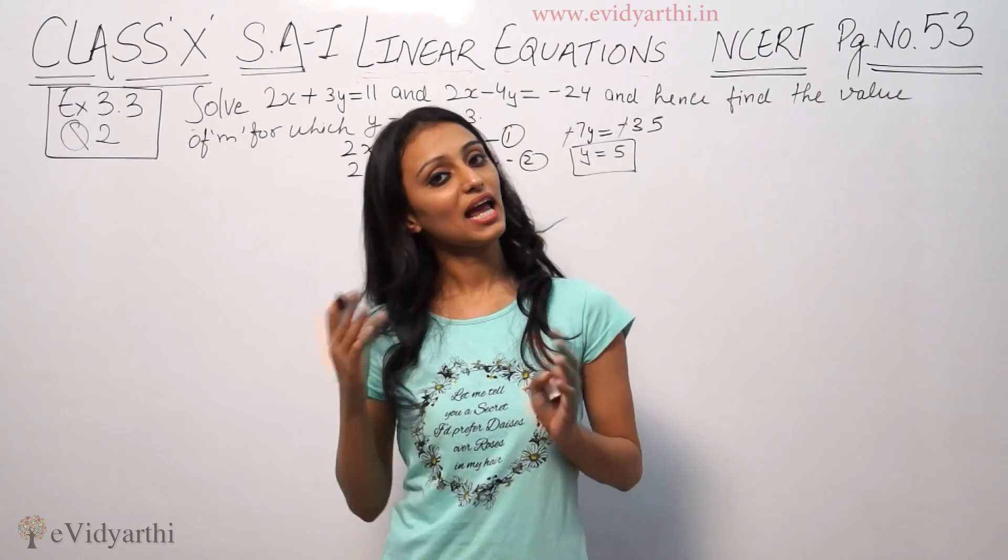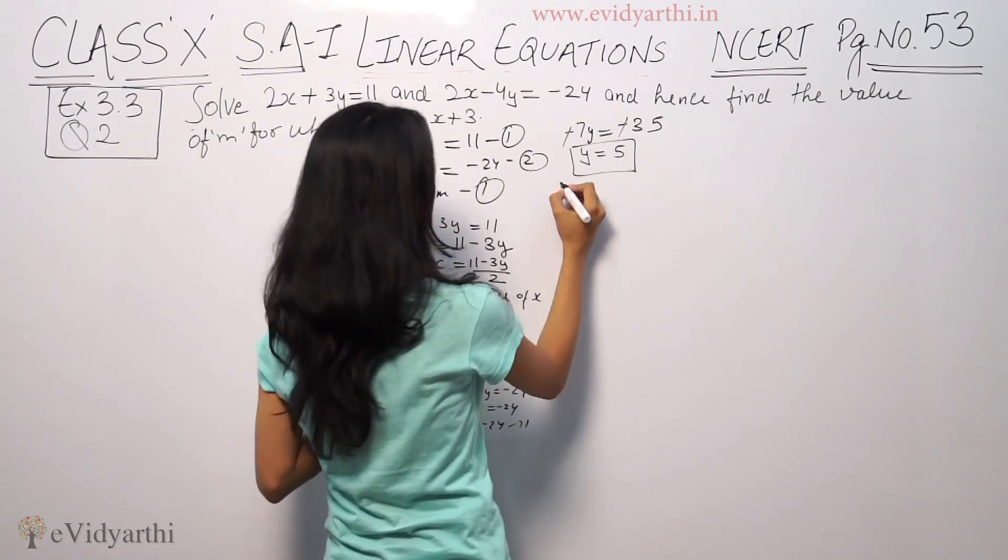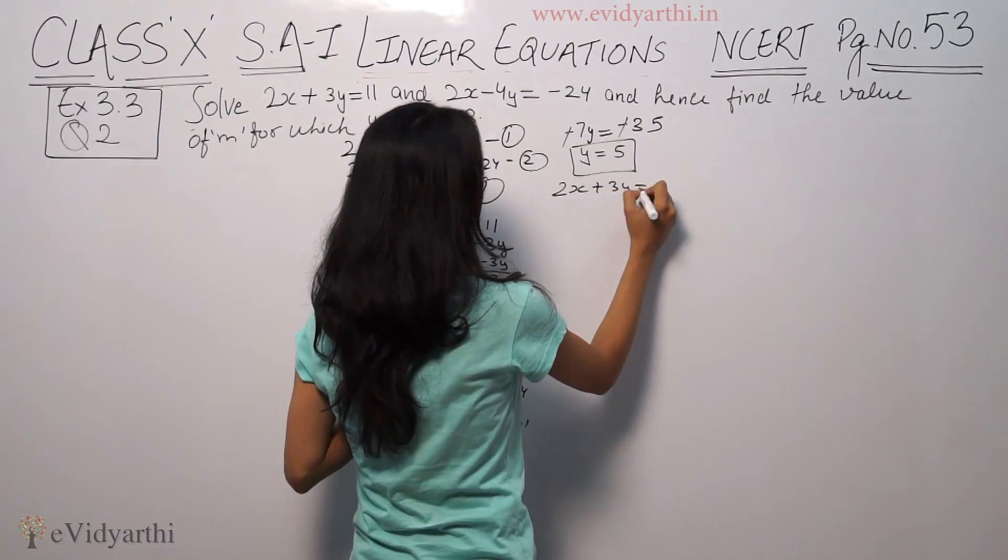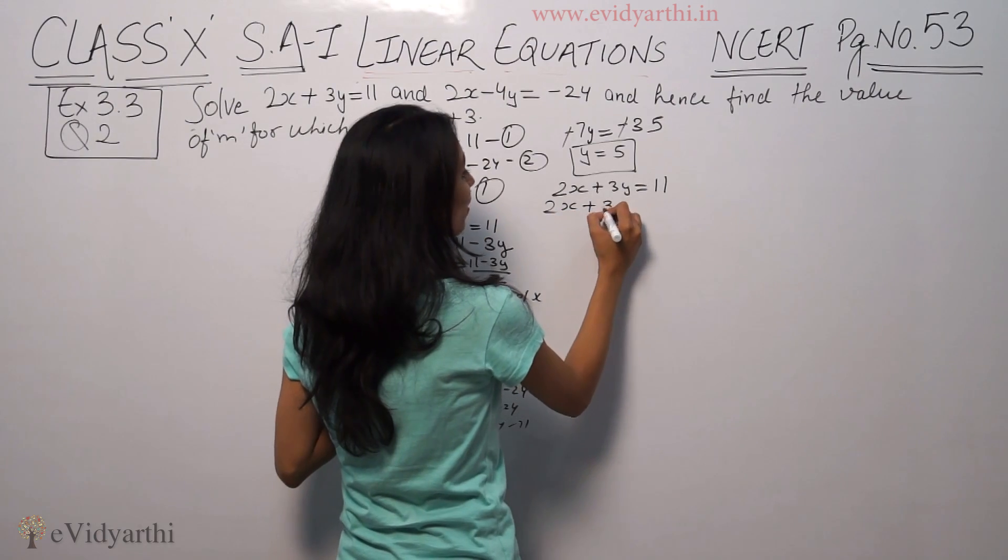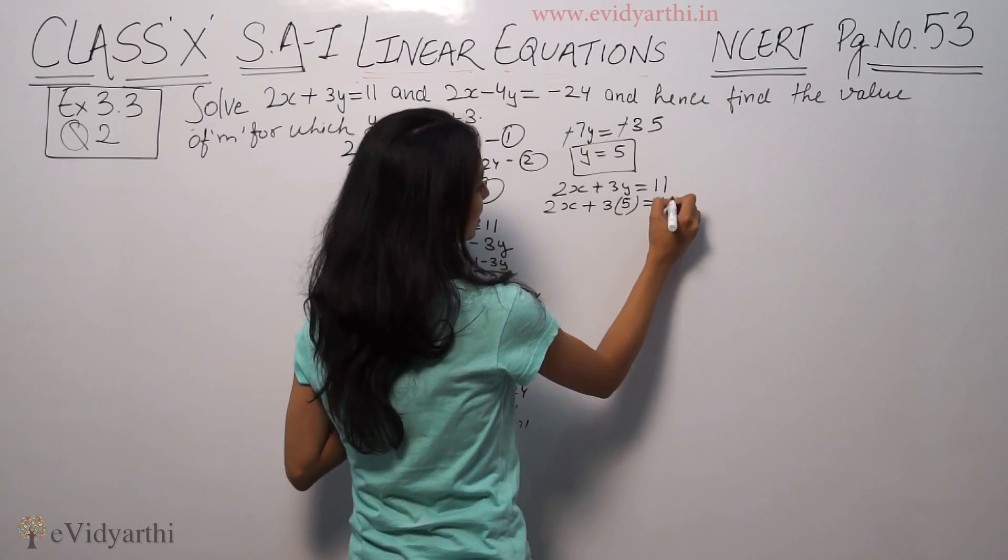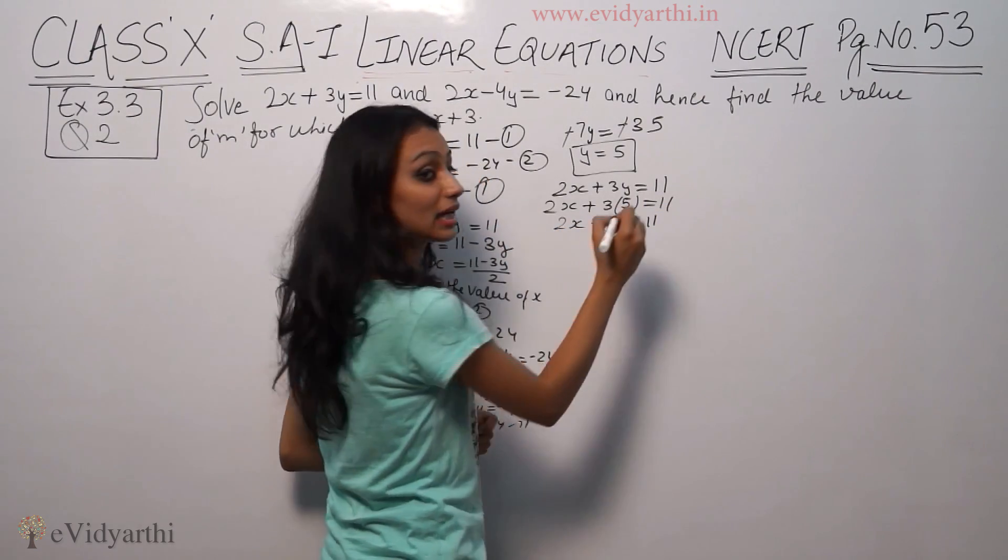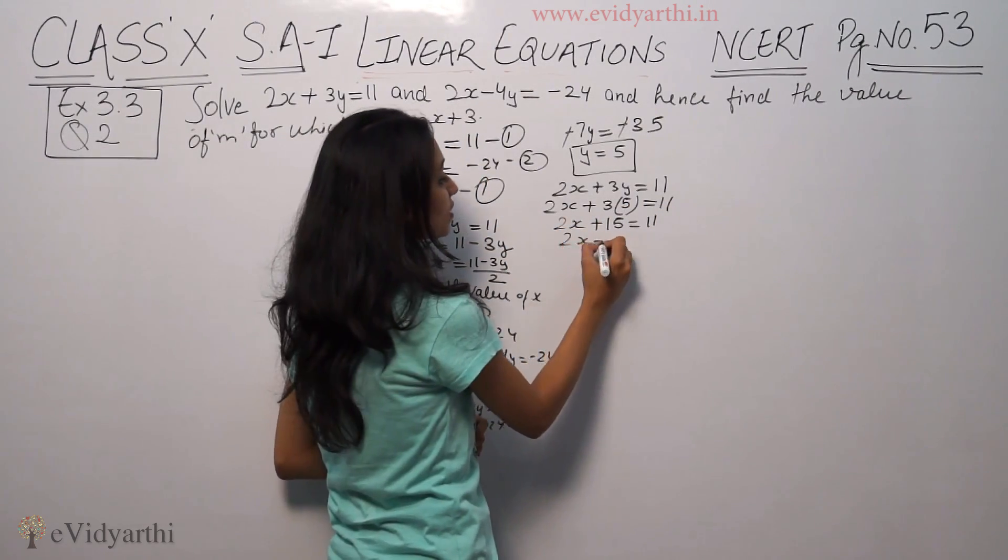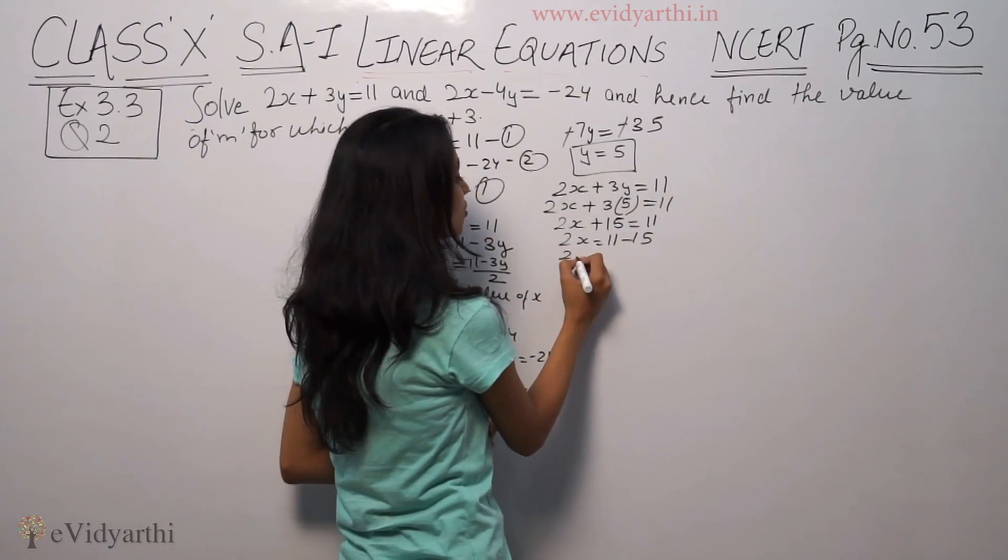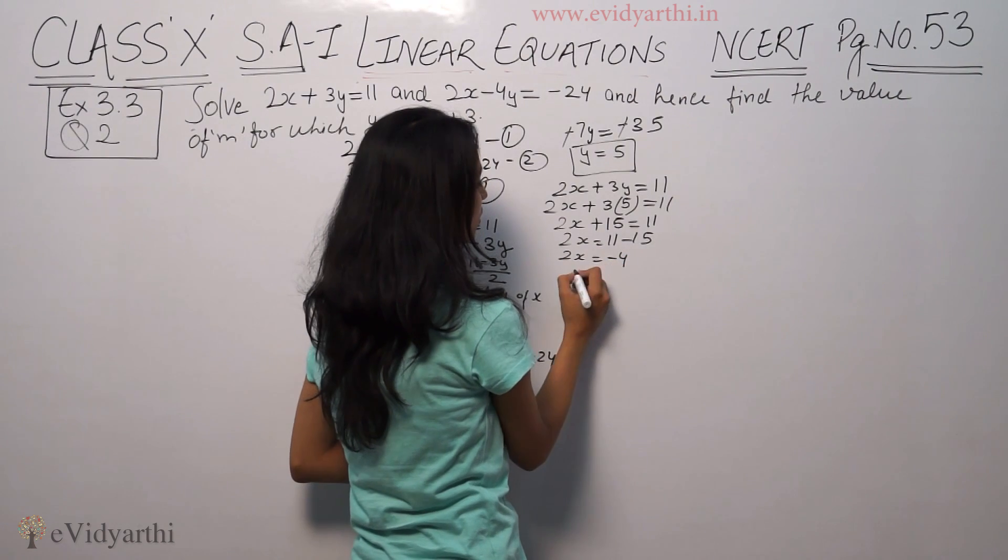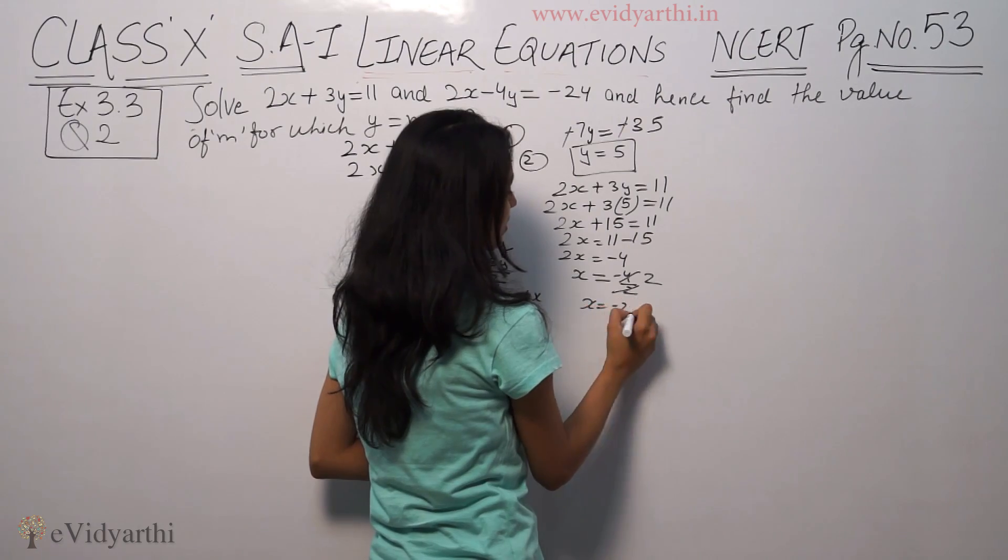Now that we have y, we can put it in both equations. Let's suppose I will put it in the first equation. 2x plus 3 times 5 equals 11, 2x plus 15 equals 11. So 2x equals minus 4, x equals minus 2.